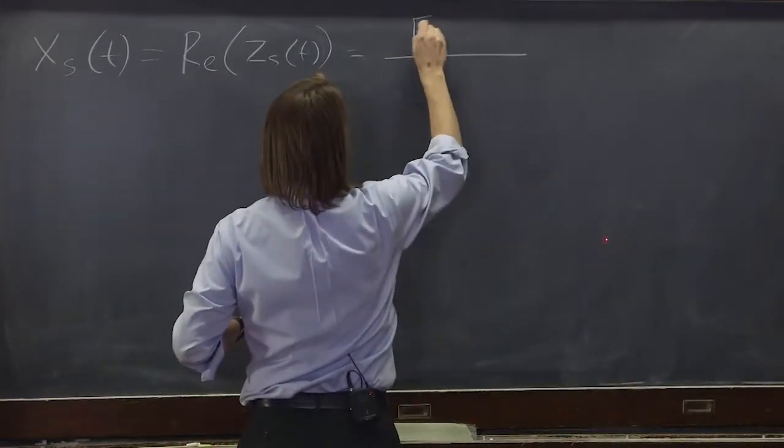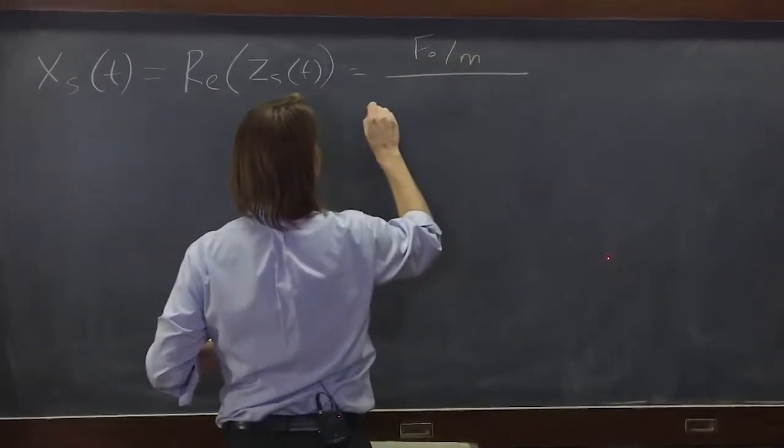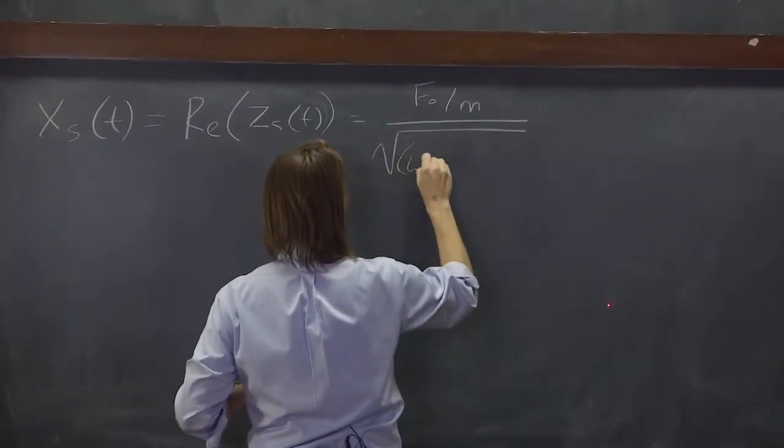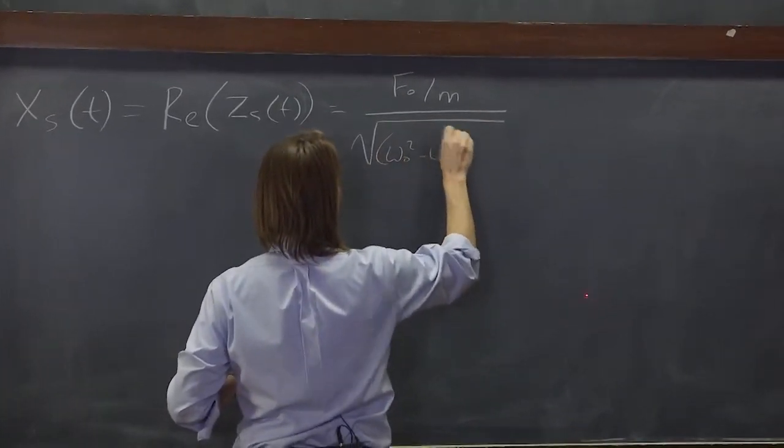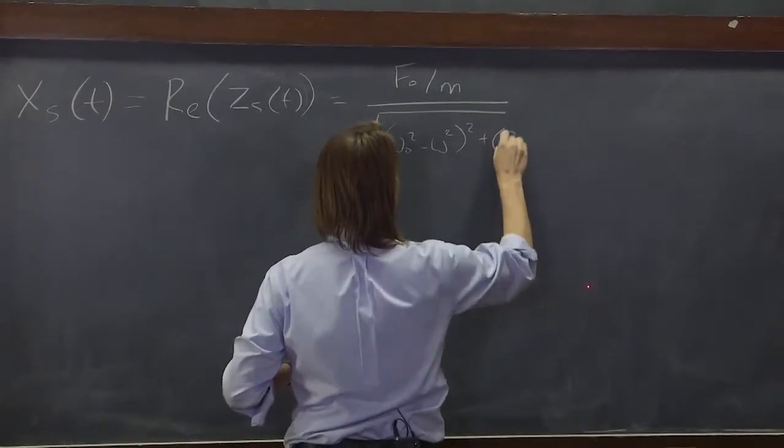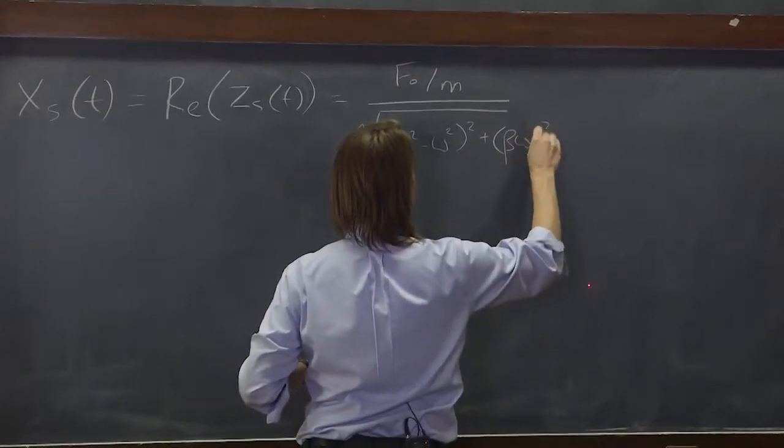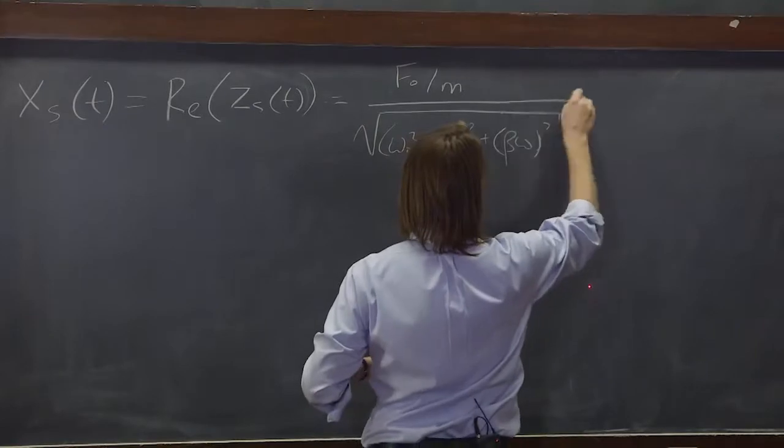So that's got f naught over m here, and in the bottom, this crazy square root, omega naught squared minus omega squared squared plus beta omega squared, like that.